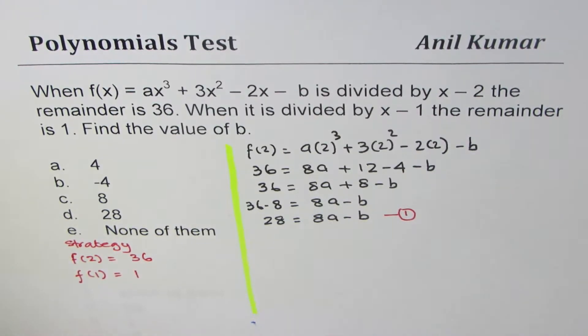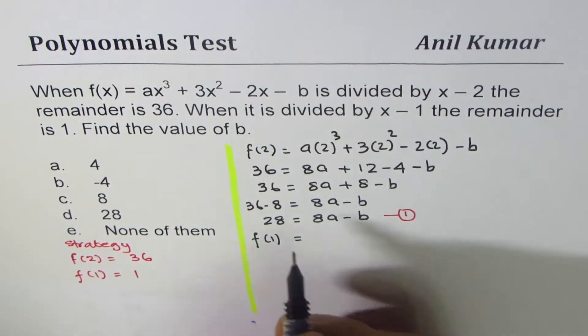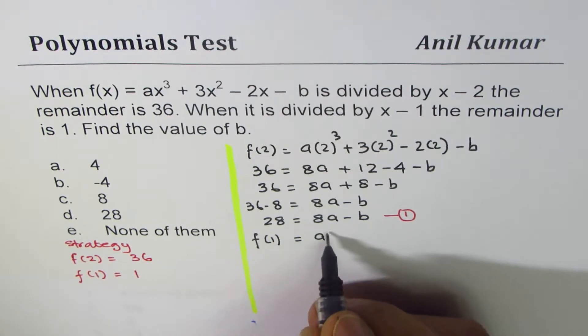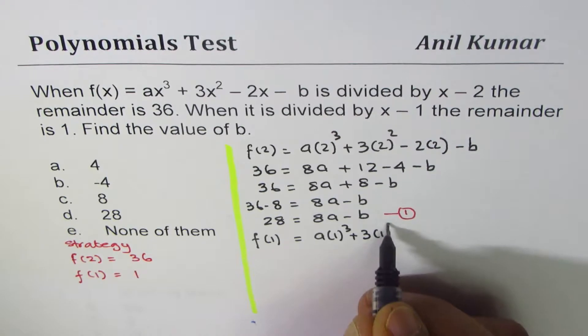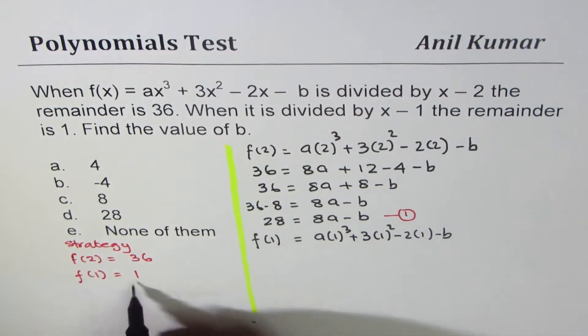We'll get the second equation by substituting 1 in the polynomial equation. f(1) = a(1)³ + 3(1)² - 2(1) - b. Since f(1) is 1, we have 1 = a + 3 - 2 - b.